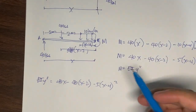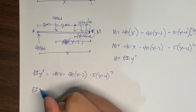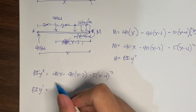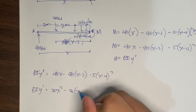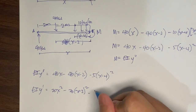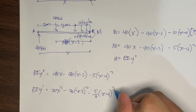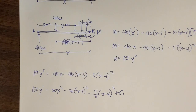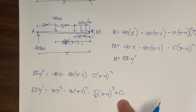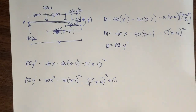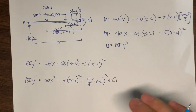Integrating both sides, EI y' equals 20x squared minus 20(x minus 2) squared minus (5/3)(x minus 4) cubed plus an arbitrary constant C1. If we divide EI throughout, this becomes the slope equation of the beam. The arbitrary constant C1 divided by EI represents the initial slope value.